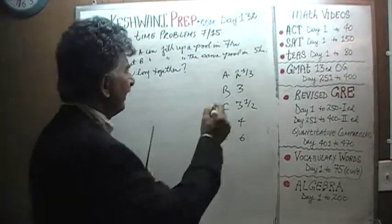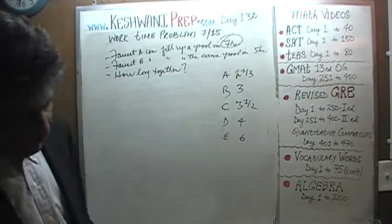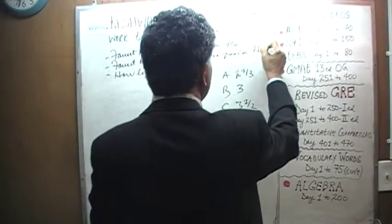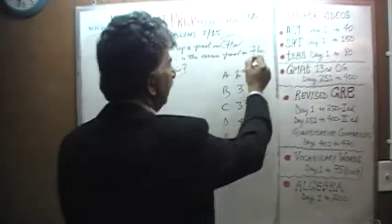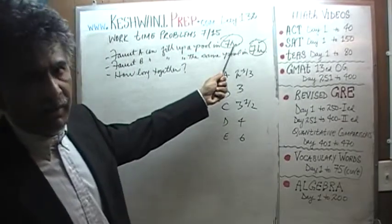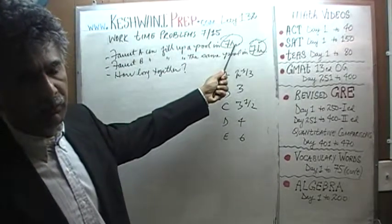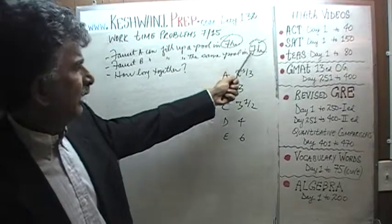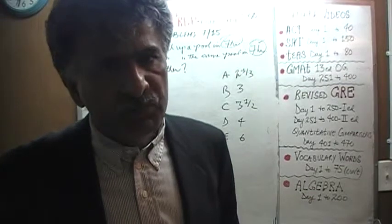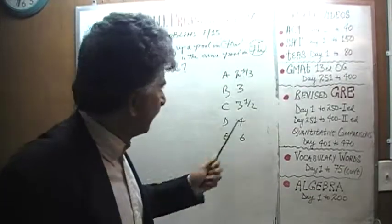Well, if this guy can fill up the swimming pool in 7 hours, if faucet B also took 7 hours, if they both took 7 hours, then in 3½ hours he can fill up half the pool. In the same 3½ hours, they can fill up the swimming pool together, which means the correct answer, whatever it is here,